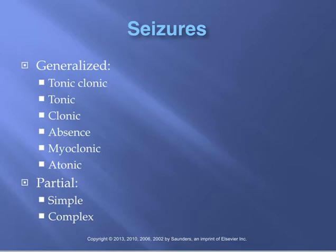Myoclonic seizures involve brief stiffening or jerking of an extremity, singly or in groups. Atonic means there is loss of muscle tone. Simple partial seizures often begin with an aura, may have unilateral unusual sensations or movement of an extremity, autonomic reactions like increased heart rate or flushing, psychic changes, and typically no loss of consciousness. Complex partial seizures involve loss of consciousness and automatisms like lip smacking, picking, and patting. Generalized seizures involve both hemispheres; partial seizures involve one hemisphere.